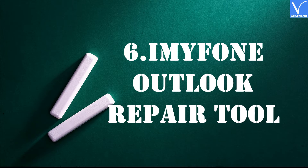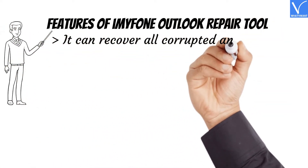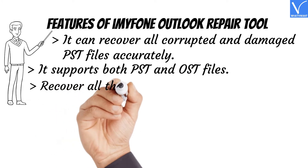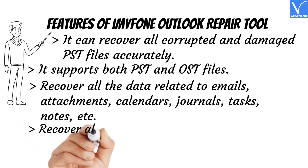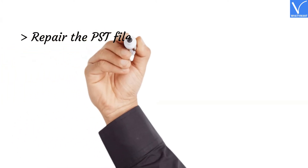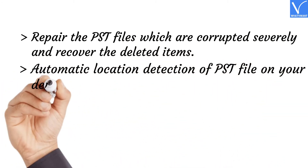Number 6: iMyPhone Outlook Repair Tool. iMyPhone Outlook Repair Tool is one of the best software that repairs PST files and saves your recovered data in any scenario. It will recover each bit of data from the corrupted PST file effortlessly. Features: It can recover all corrupted and damaged PST files accurately. It supports both PST and OST files. Recover all data related to emails, attachments, calendars, journals, tasks, notes, etc. Recover all emails that are permanently deleted from Outlook. Repairs severely corrupted PST files and recovers deleted items. Automatic location detection of PST files on your device is also available.